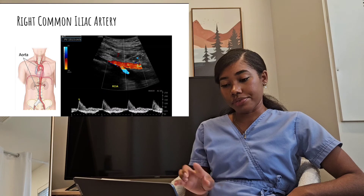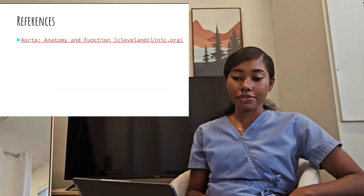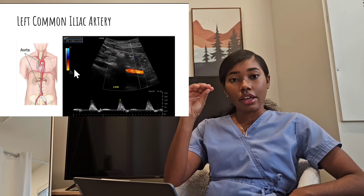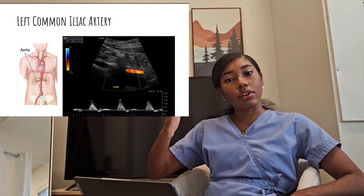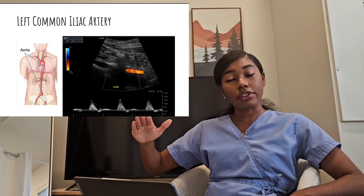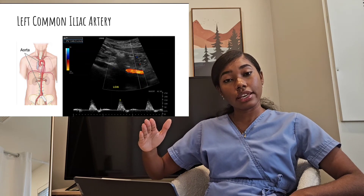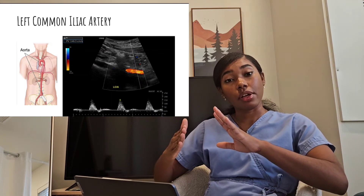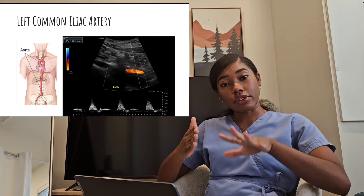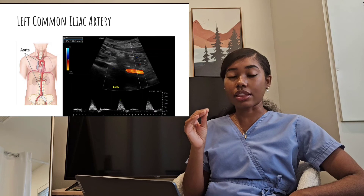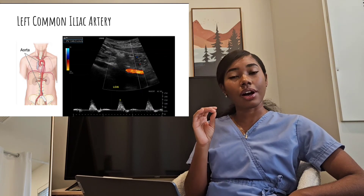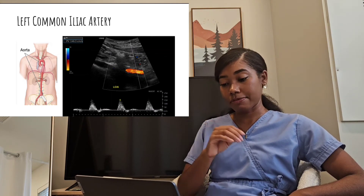Then take the color and pulse wave Doppler image. For the left common iliac, do the same thing — slowly turn on it or angle all the way out to the patient's left, slowly angle in with color flow on until you see flashing color flow. The first vessel you come in contact with should be the left common iliac artery in the pelvis, then take your color and pulse wave Doppler image.